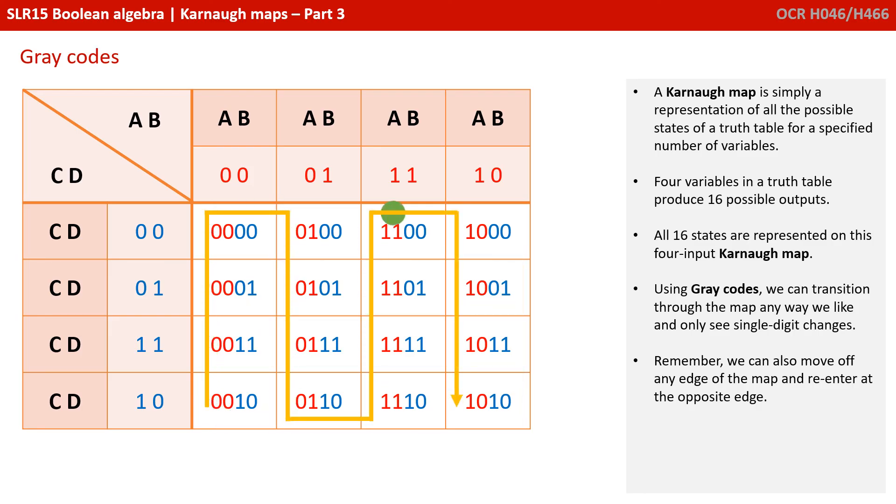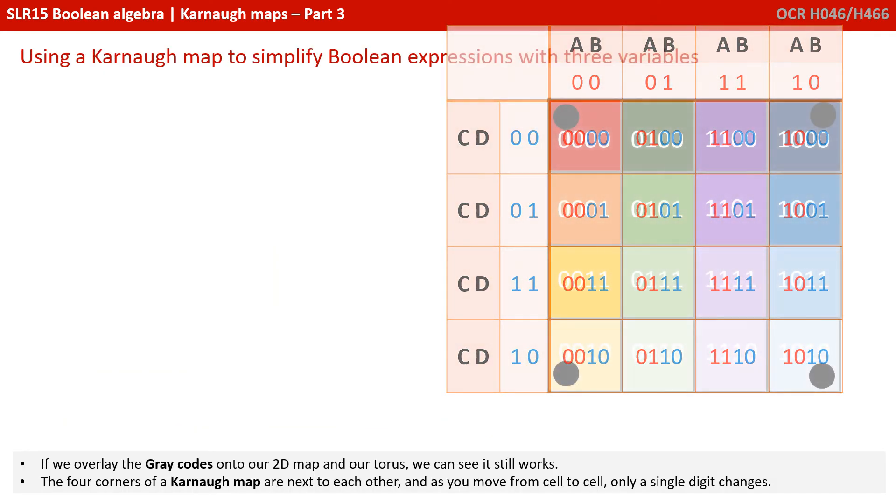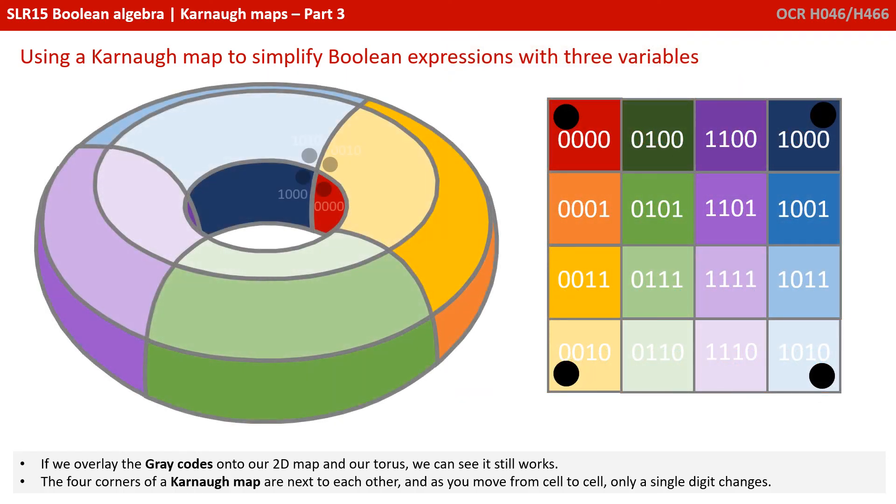A Karnaugh map is simply a representation of all the possible states of a truth table for a specified number of variables. Four variables in a truth table produces 16 possible outputs. All 16 states are represented on this four-input Karnaugh map. Using gray codes, we can transition through the map any way we like and only see a single digit changes at a time. Remember, we can also move off any edge of the map and re-enter at the opposite edge. If we overlay the gray codes onto our 2D map and our torus, we can see it still works. The four corners of a Karnaugh map are next to each other and as you move from cell to cell, only a single digit changes.